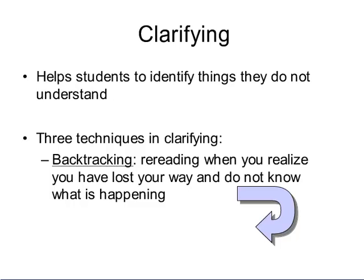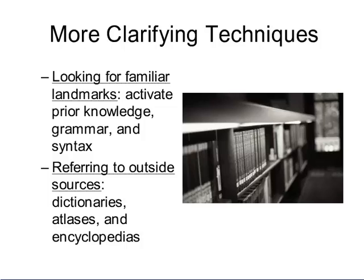Clarifying is another strategy often focused on in reciprocal teaching. It helps students identify the things in the text and story that they do not understand. The three major techniques are backtracking — re-reading when you realize you have lost your way and don't know what is happening in the story — looking for familiar landmarks by activating prior knowledge, grammar, and syntax found in the story, and referring to outside sources such as dictionaries, atlases, and encyclopedias to better clarify what they are reading.